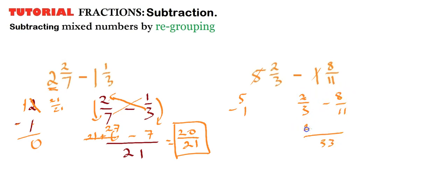11 times 2 is 22. Minus 3 times 8 is 24. Same situation. This fraction is smaller than this fraction.